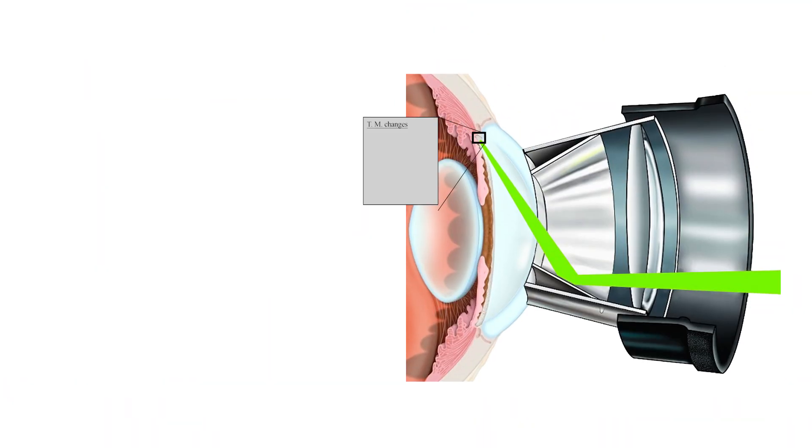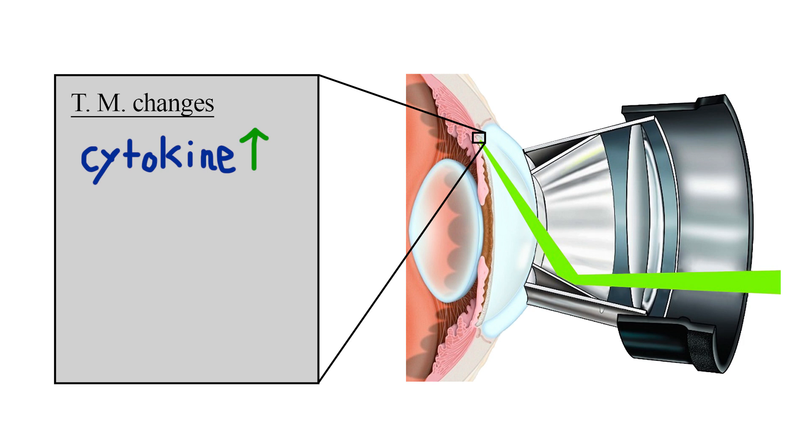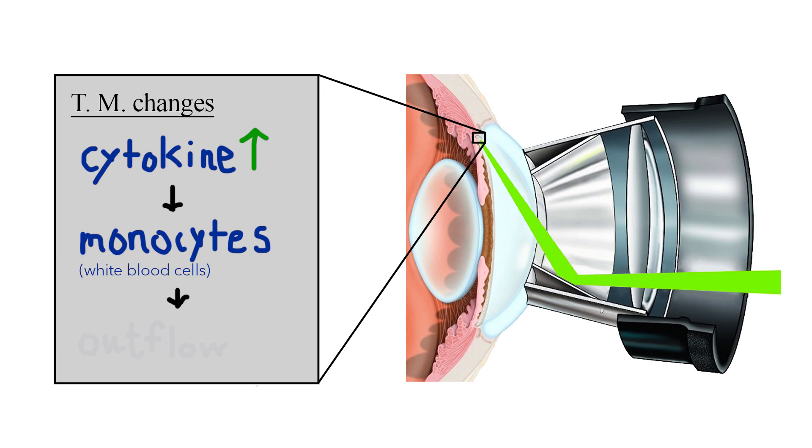But how would a laser clear the trabecular meshwork? Well, to put it briefly, researchers have found that the application of SLT can cause biological changes. Gene expression patterns in the trabecular meshwork change after SLT. One of these changes is greater expression of cytokines, or immune signaling molecules. These cytokines recruit monocytes, or white blood cells, to increase aqueous outflow. In other words, application of a laser somehow leads to an immune response that increases fluid outflow and lowers intraocular pressure.